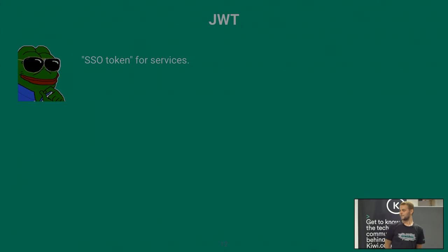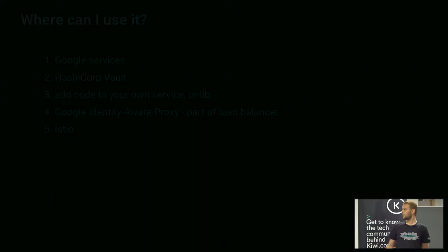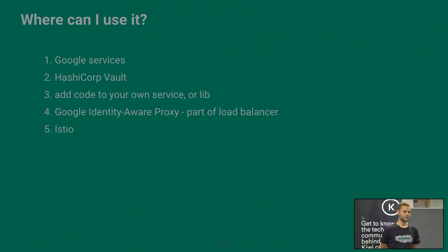So basically, TLDR, where are we now? We have the JWT tokens, which are essentially single sign-on tokens that can be used for any services running anywhere to talk to anything else. You basically achieve single sign-on for your applications and don't need to share any secrets anymore. But this was just the part about how to get JWT tokens — now I need to be able to actually use them somewhere, otherwise it's not useful.